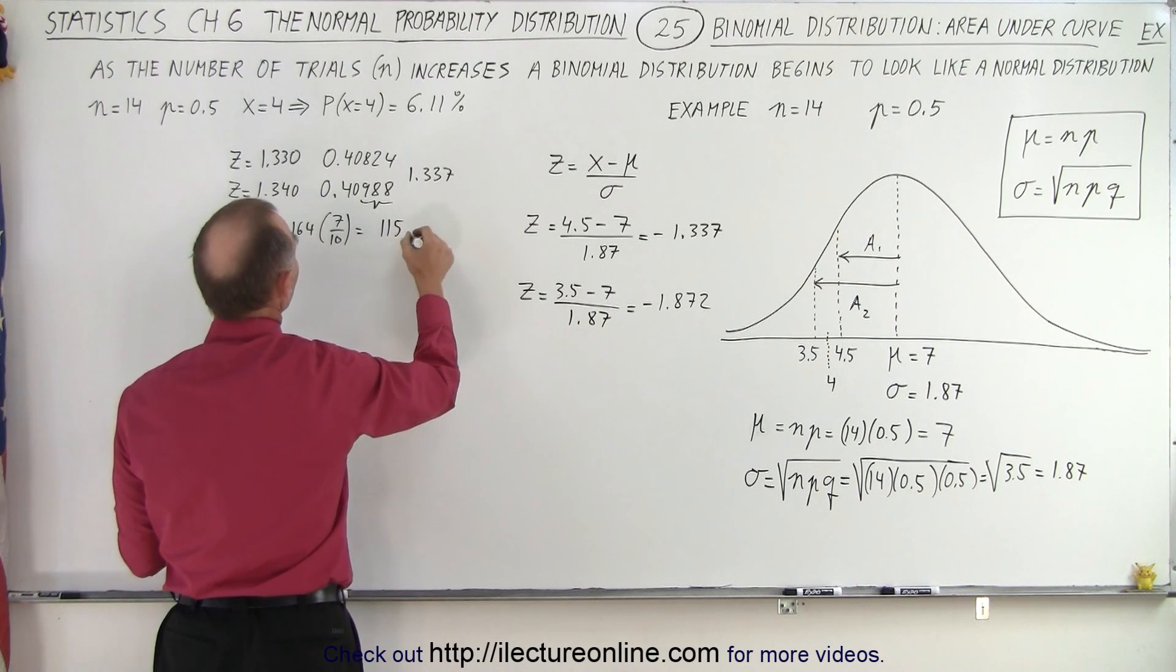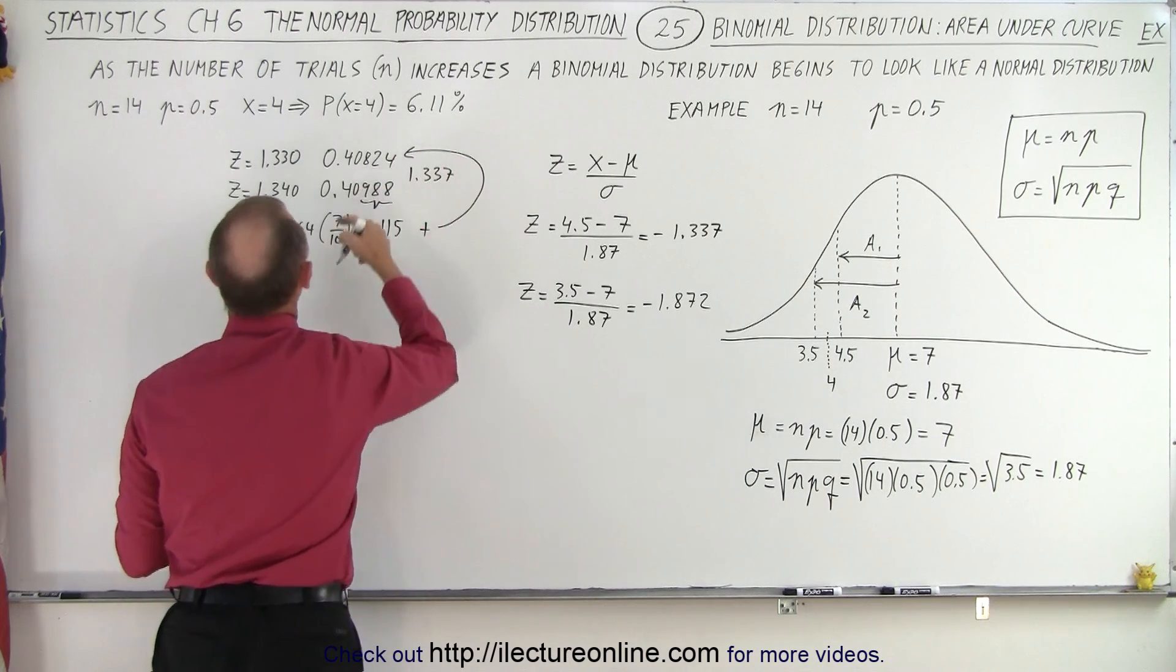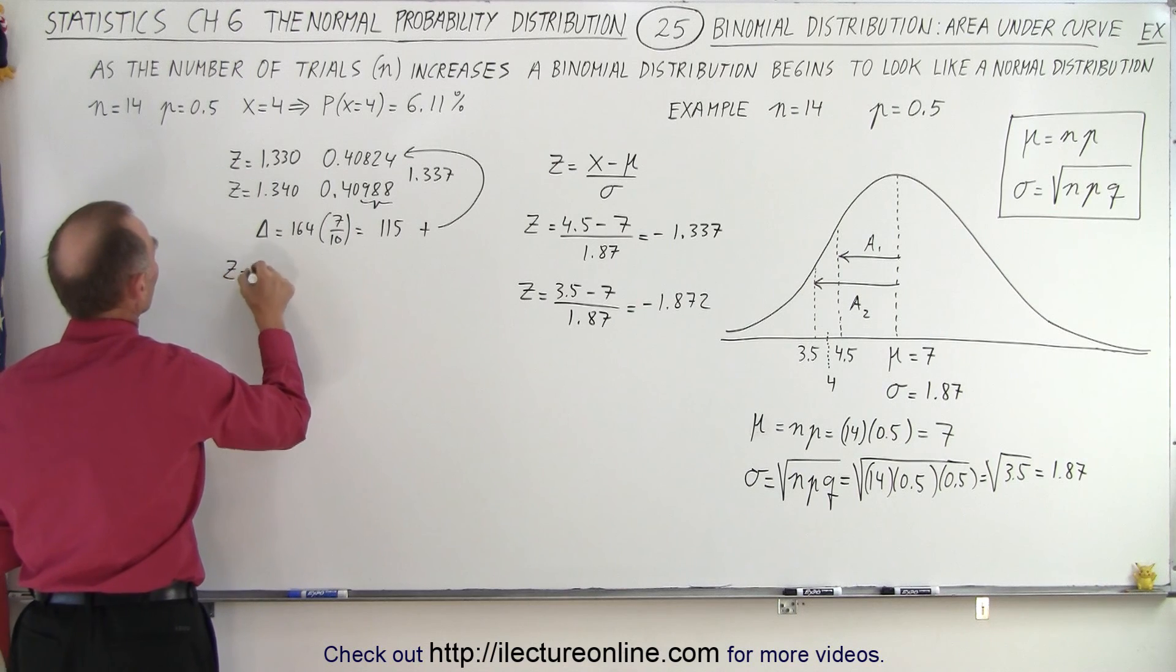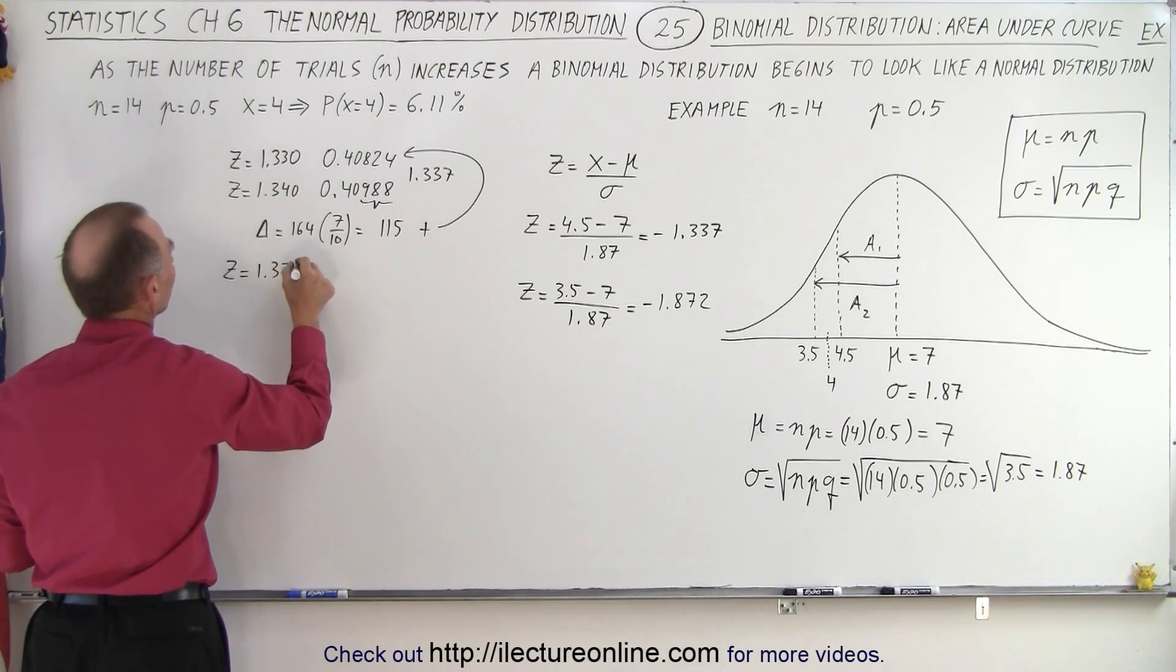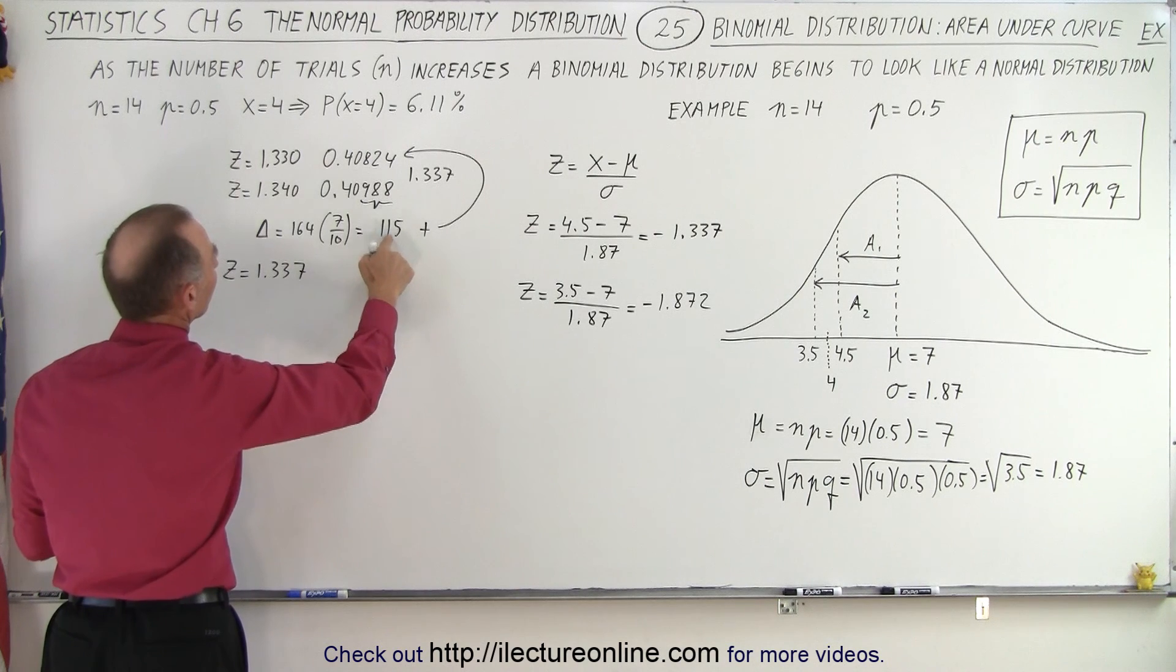I'm going to add that to the lower value to get z equals 1.337. Now I have extrapolated it so that becomes 0.40939.